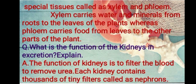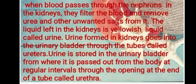Next question: what is the function of the kidneys in excretion? The function of kidneys is to filter the blood to remove urea. Each kidney contains thousands of tiny filters called nephrons. When blood passes through the nephrons, they filter the blood and remove urea and other unwanted salts. The liquid left in the kidneys is a yellowish liquid called urine. Urine formed in the kidneys goes into the urinary bladder through tubes called ureters, and is stored there before being passed out through the urethra.